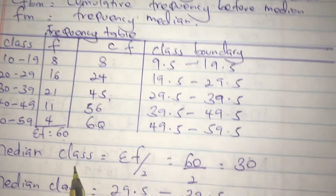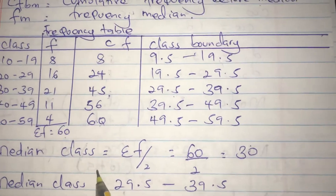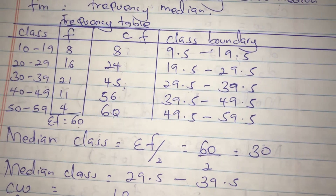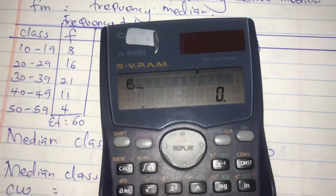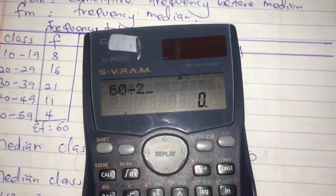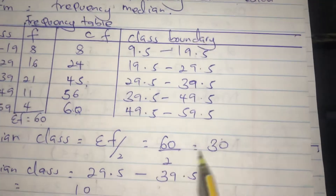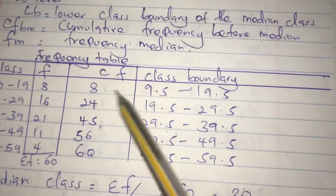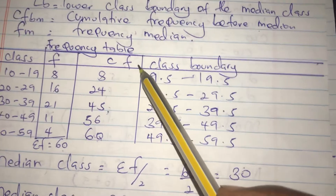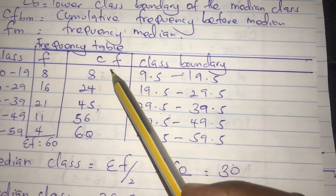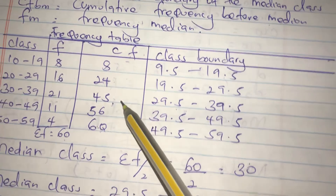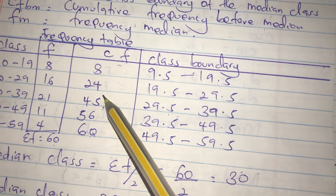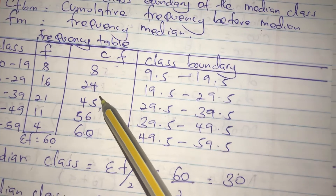To find the median class, we divide summation f by 2. Our summation f is 60, so 60 divided by 2 gives 30. We then look at the cumulative frequency column to find where 30 falls. It is not within 8, not within 24, but it falls within 45 — so our median class is in that row.